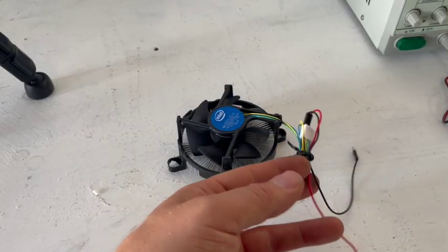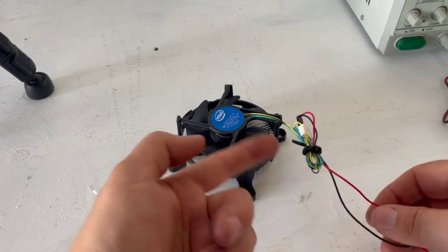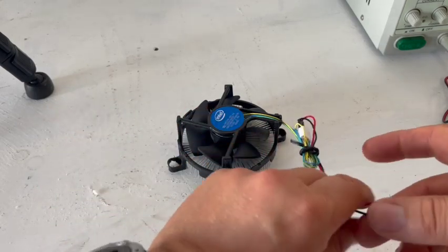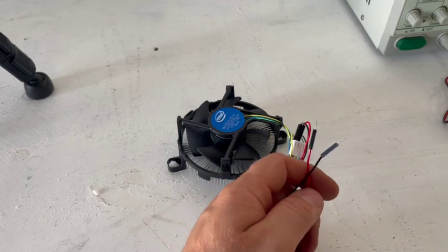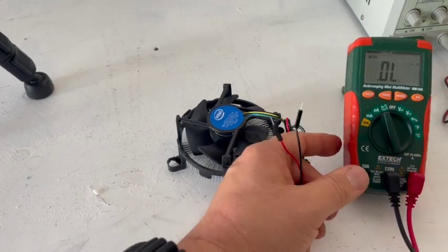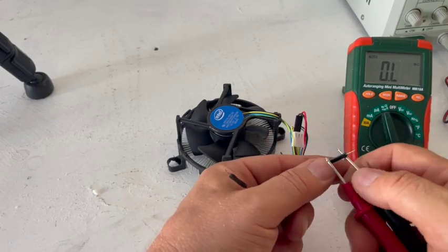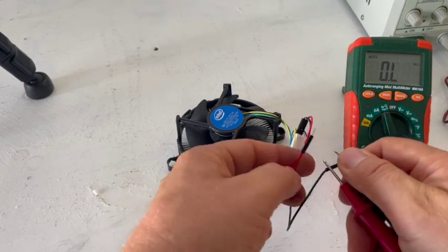Now this fan has a bunch of wires. Only two of them are the positive and negative. The other ones control it, turn it on and off or change the speed. I don't know. It doesn't matter. So I'm going to take my meter here and I'm going to switch it over to resistance and we're going to measure the resistance of this fan and listen to somebody mow their lawn at the same time.